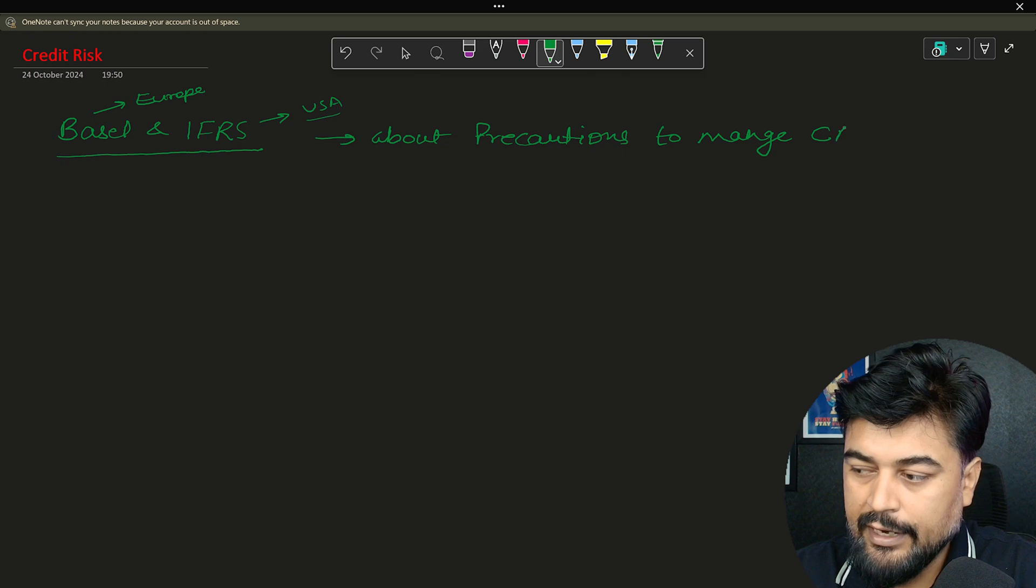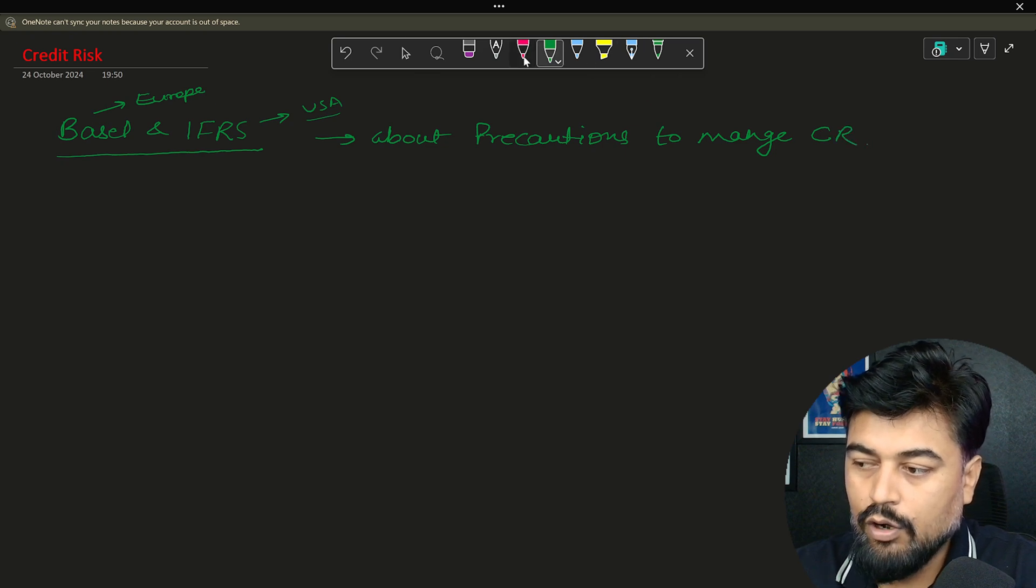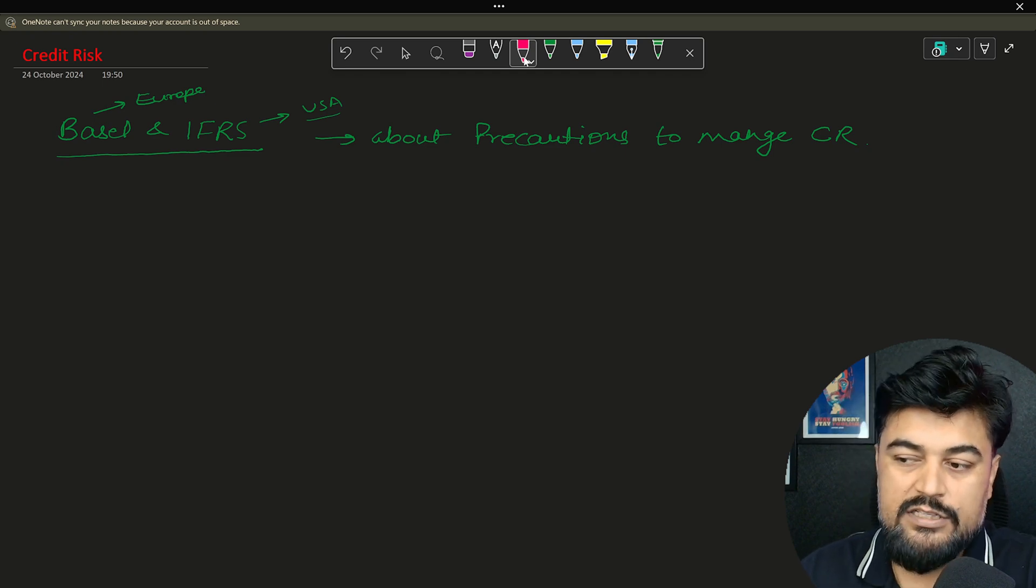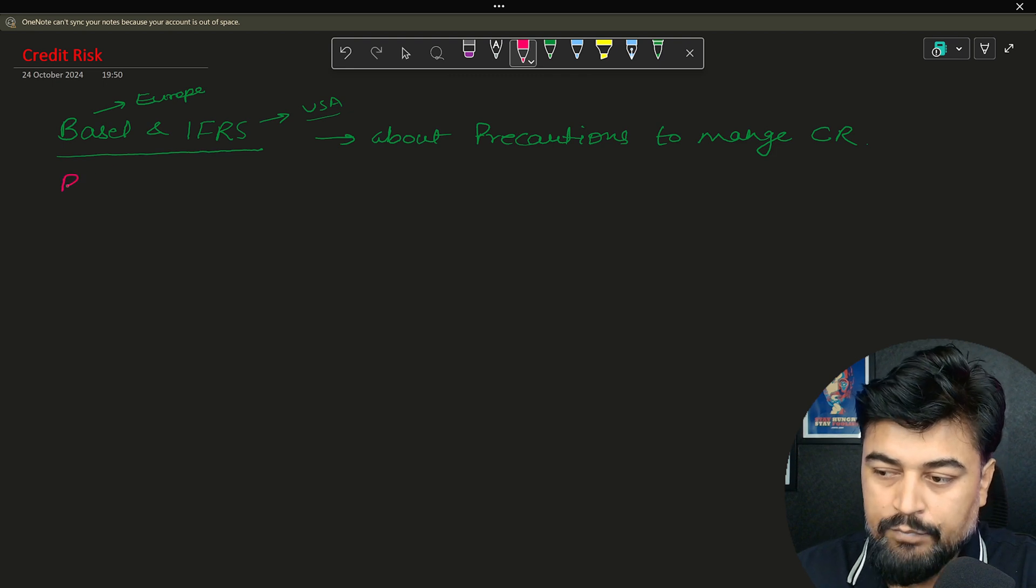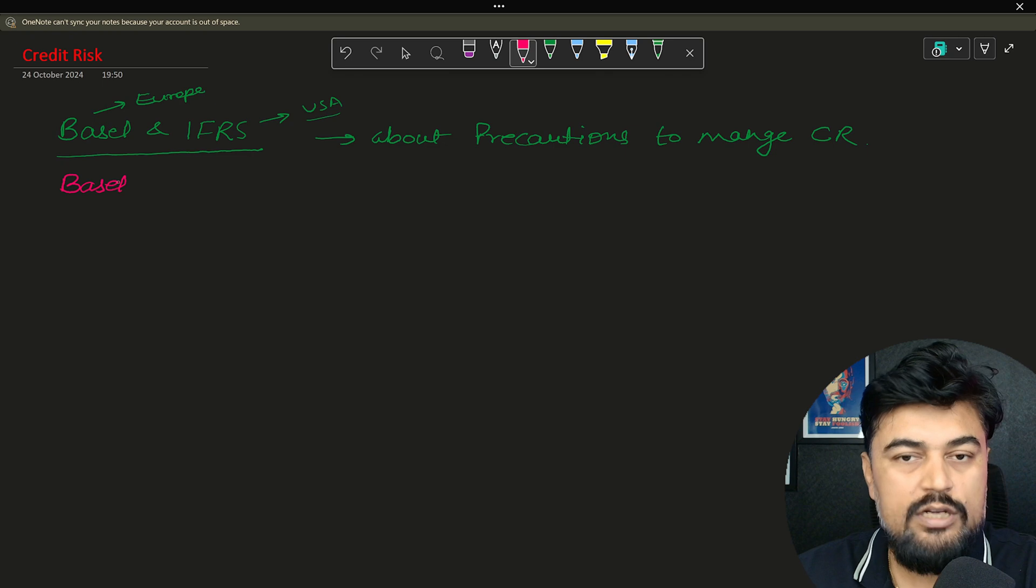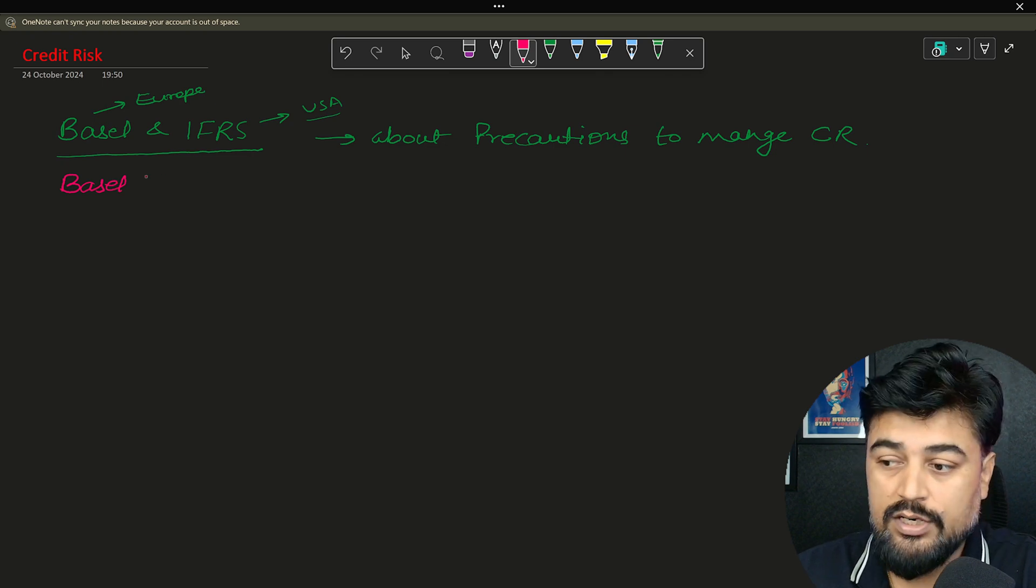Now when you say precautions, what is precaution? There are some pillars which are given by Basel. Basel is more important in this whole series because Basel is highly used. There are Basel I, Basel II, and Basel III - three types of Basel.